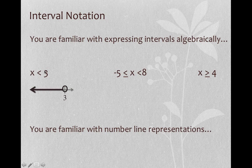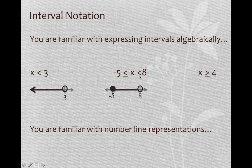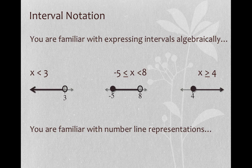You're also familiar with number line representations of these inequalities. Because x is strictly less than 3 (not less than or equal to), we have an open circle on the 3 and we're shading to the left. For the middle inequality, because we include negative 5 there's a closed circle there, but we do not include 8, so there's an open circle there. For x is greater than or equal to 4, we have a closed circle because of the equal sign, and we're shading to the right.